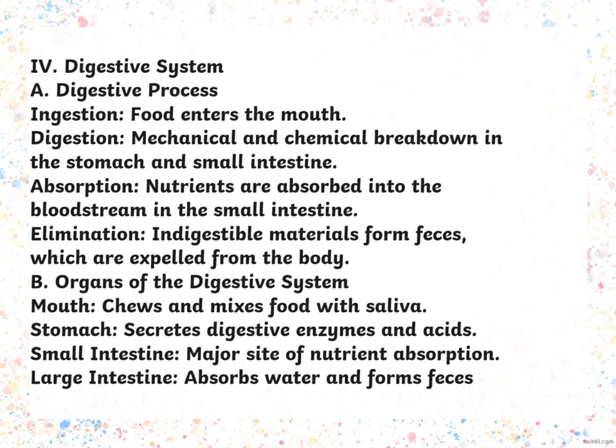Then we have the organs of the digestive system. We have the mouth, which chews and mixes food with saliva. The stomach, which secretes digestive enzymes and acids. The small intestine, which is the major site of nutrient absorption. And the large intestine, which absorbs water and where feces are formed.